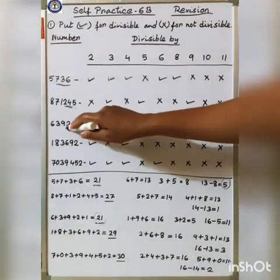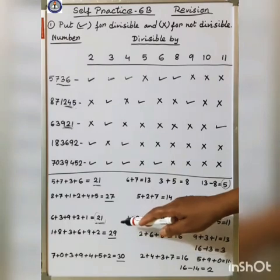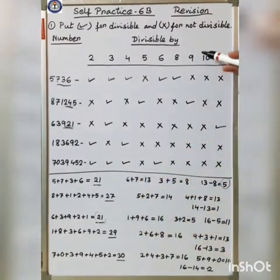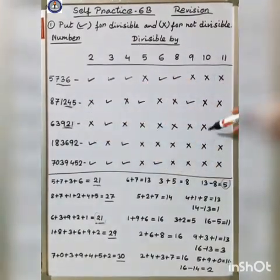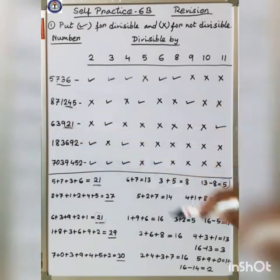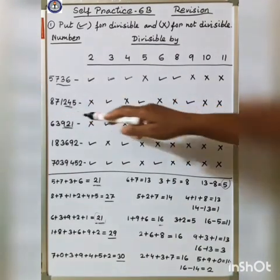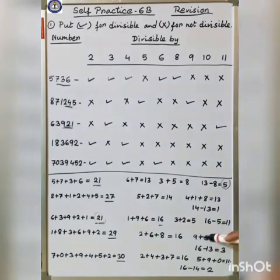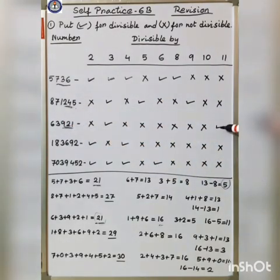For 8: the last 3 digits 921 is not divisible by 8, so cross. For 9: the total is 21, and 21 is not divisible by 9, so cross. For 10: the last digit is 1, not 0, so cross. For 11: odd places are 1, 9, and 6, total is 16. Even places are 2 and 3, total is 5. 16 minus 5 equals 11, and 11 is divisible by 11. Therefore, the whole number is divisible by 11, so tick.